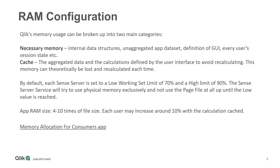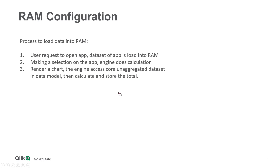Many customers ask how much RAM exactly an app consumes. The app is a compressed file, but once we load the app data into RAM, it will consume roughly four to ten times the QVF file size for each user session. On top of that, approximately 10% additional calculation data will be added. The process for the engine to load data into RAM begins when the user accesses the hub and opens the app — the app data, metadata, and user session data are all loaded into RAM.